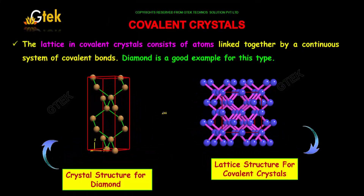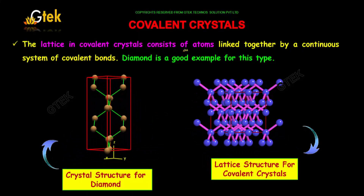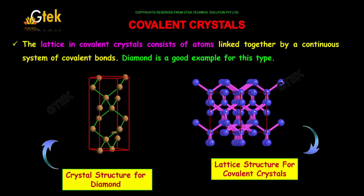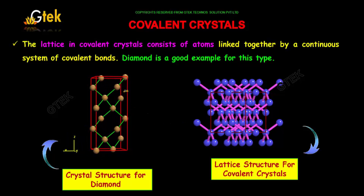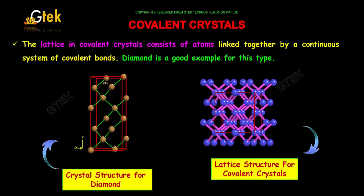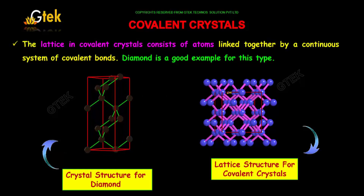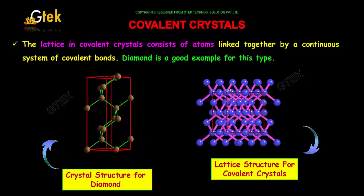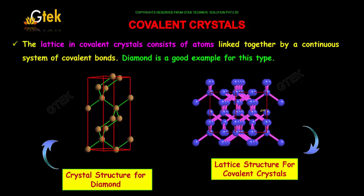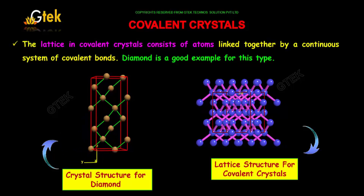Covalent crystals. The lattice in covalent crystals consists of atoms linked together by continuous covalent bonds. Diamond is a superb example of this type.